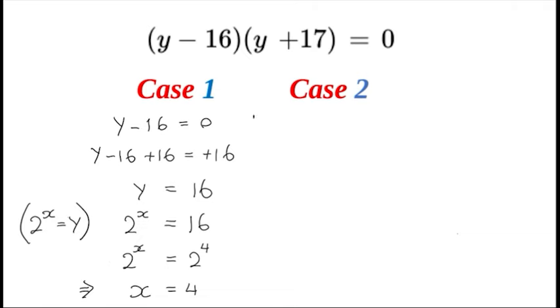Now let's go on to case 2 where we have y plus 17 is equal to 0. Subtract 17 from both sides and we will get y is equal to negative 17.